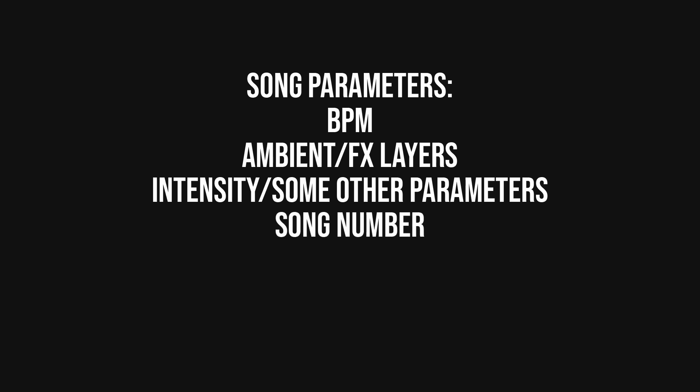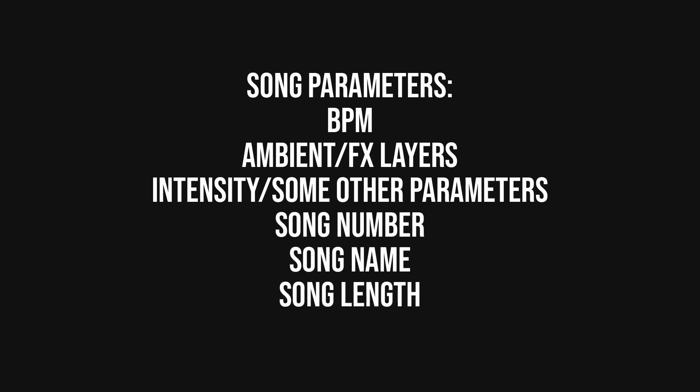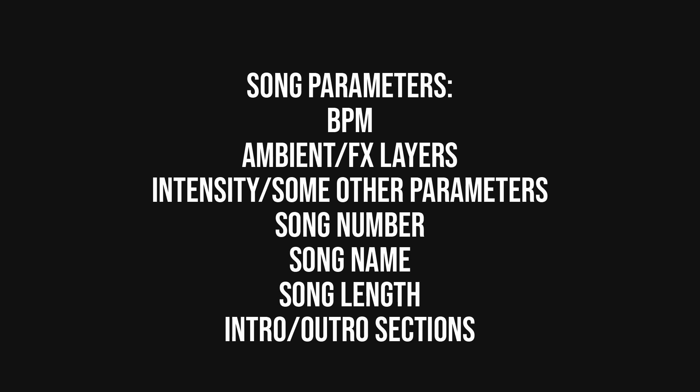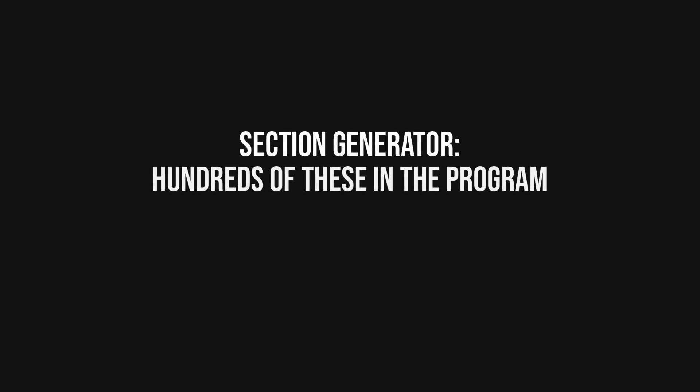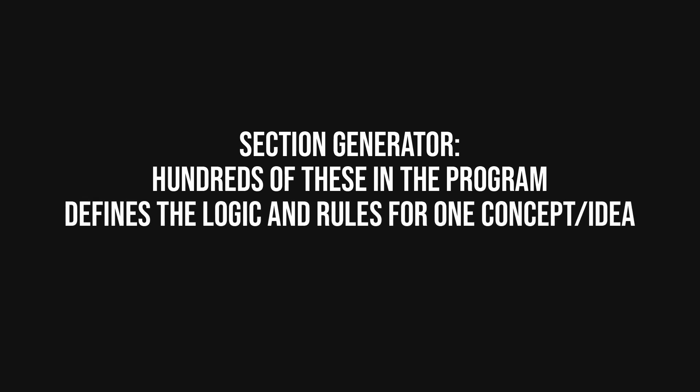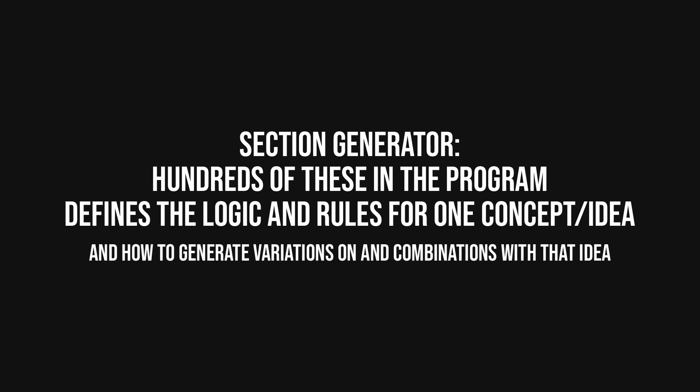Next, it generates the song number and gives the song a random name. It also randomizes the length of the song — this length is only preliminary, as the actual length of the generated sections determines the final length. Then there's a chance that intro and/or outro sections will be generated. This brings us to the meat of the generation system: the concept of a so-called section generator. Currently there are around hundreds of these in the program. A section generator is essentially the logic and rules for one concept or idea, defining the core of that idea as well as the logic for how to generate variations on and combinations with that idea.